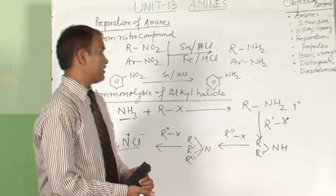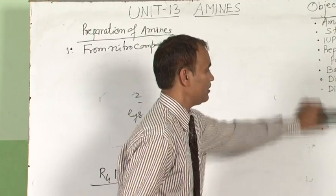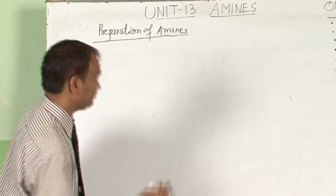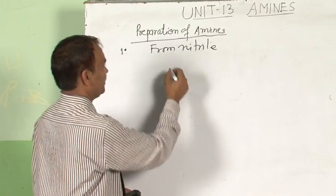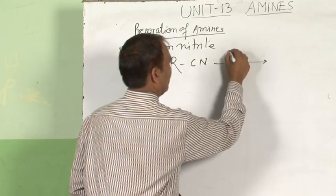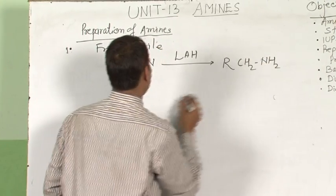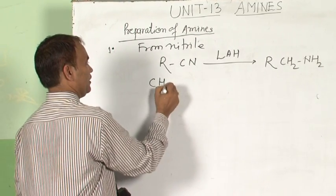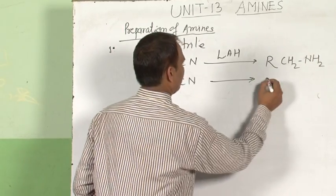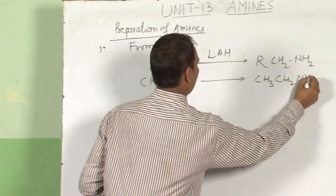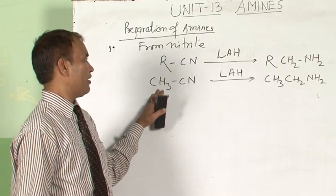The next method is reduction from nitrile. Nitrile on reduction gives amine. This may be aliphatic or aromatic: R–CN on reduction with lithium aluminium hydride gives primary amine. For example, CH₃CN (methyl cyanide) gives CH₃CH₂NH₂. The importance of this reaction is that it produces an amine having one carbon more than the parent nitrile.